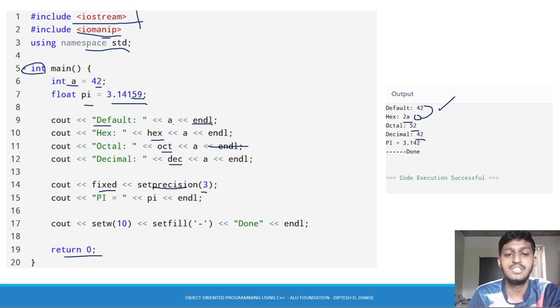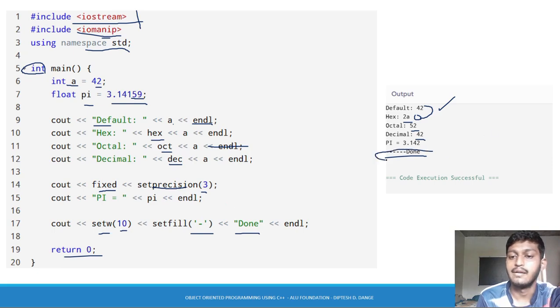Cout setw(10) so total count 10 and 4 block fill, 6. Setfill(6) dash 1 2 3 4 letters dash dash dash dot. Total count 10, 10 is 4 block down like this way.